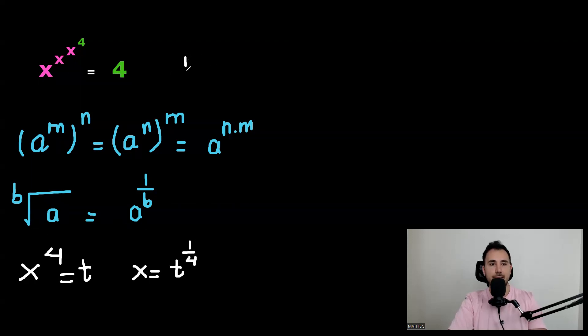Now let's go and rewrite the equation in terms of T. So it will be T to power of one over four. That was the first X. That was the first X. The second X, again, T to power of one over four. And all of this was T, right? To power of T.